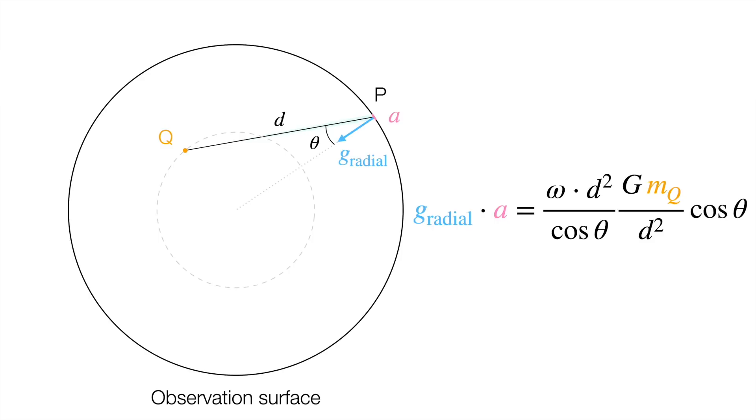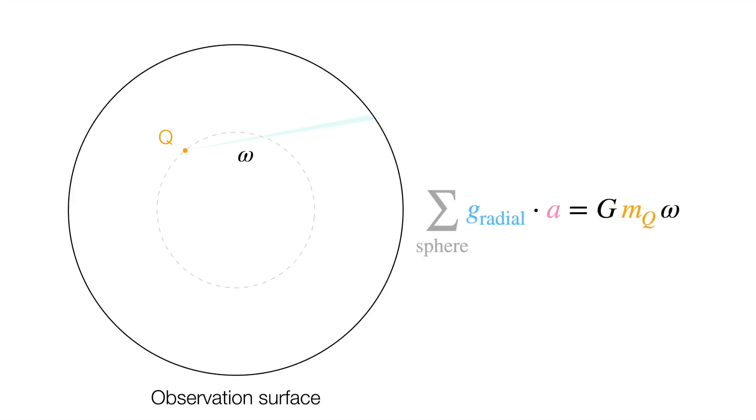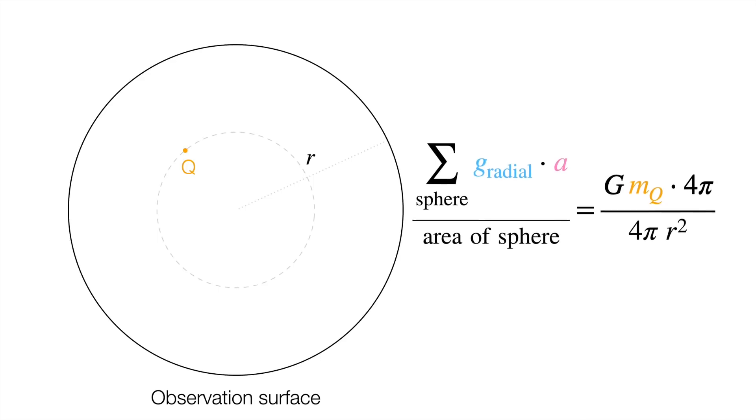Multiplying this out looks messy at first. But then the magic happens. The distance and the angle cancel out, which are exactly the quantities that characterize different points on the observation surface. Meaning this product is independent of p. It's true for all points on the observation surface. For the same opening angle omega of a little cone coming from q, g radial times A where it crosses the sphere is just a constant. Now we're in business. To sum the product over the sphere, we just turn our little solid angle into the whole solid angle of a sphere. Four pi. And to get the average, we just divide by the area of the sphere. Cancel the four pi's and we have our answer.